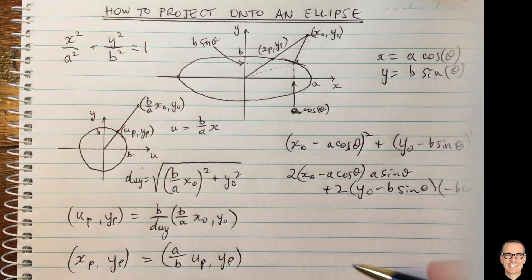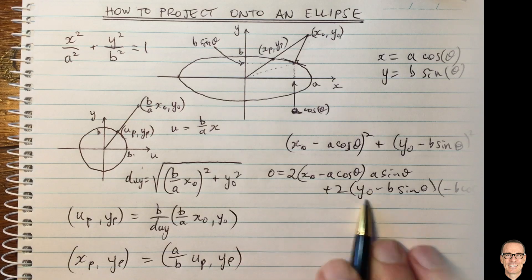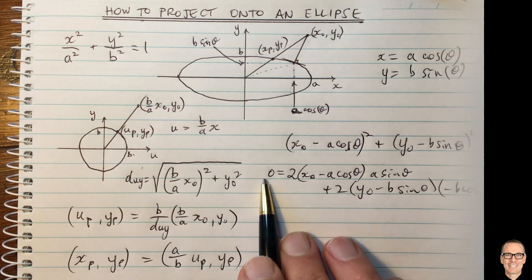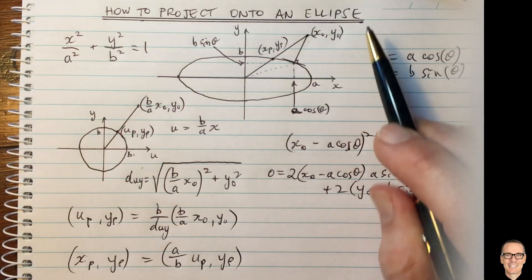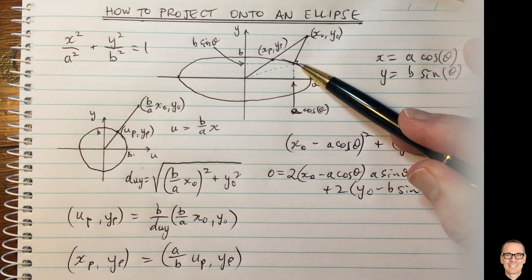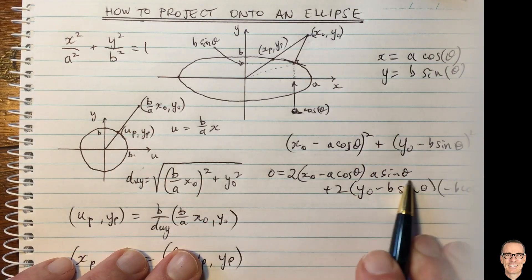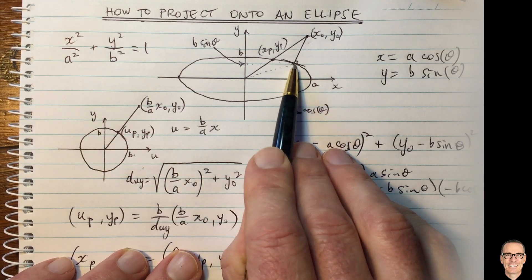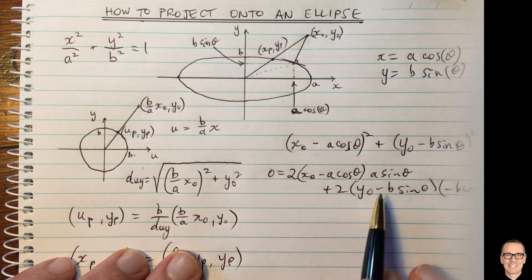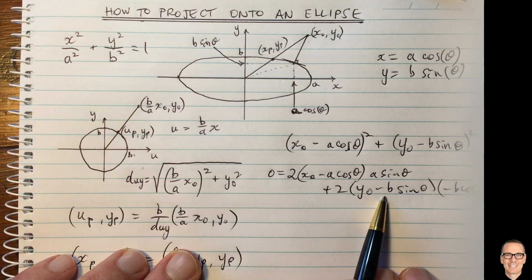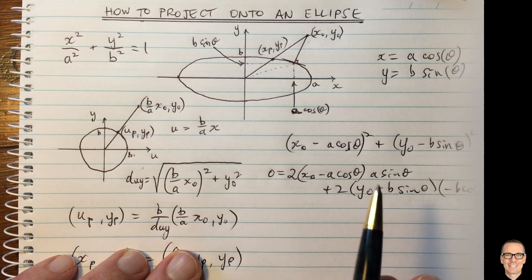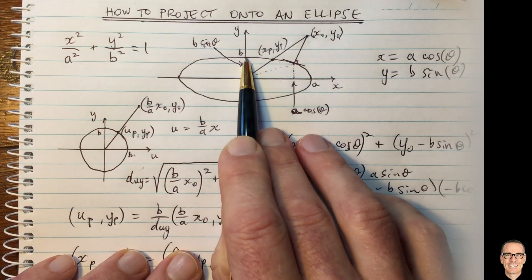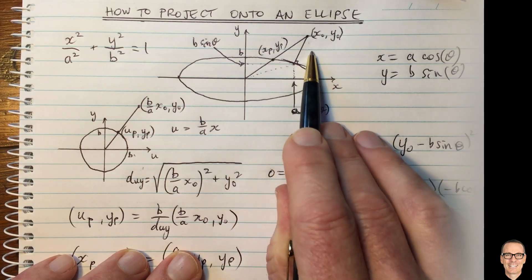Now we set this term equal to zero, and we're going to find the value of theta which corresponds to the shortest distance here. Now unfortunately there's no easy closed form expression for this in terms of theta to find the point where your distance is minimized, but you can solve this numerically. Something in your favor is you know the quadrant where your point is, so you only need to search over angles that are in that quadrant.